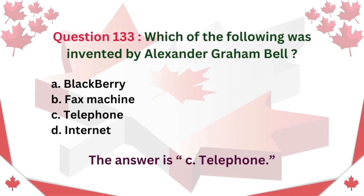Question 133: Which of the following was invented by Alexander Graham Bell? A. Blackberry. B. Fax machine. C. Telephone. D. Internet. The answer is C: Telephone.